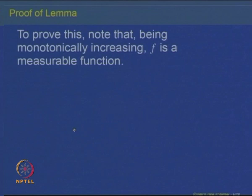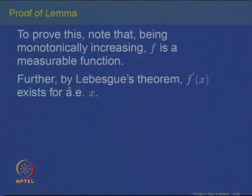To prove the lemma, we first note that being monotonically increasing, this function is measurable. Every monotonically increasing function is continuous almost everywhere — a theorem normally proved in basic real analysis courses. Alternatively, one can use the definition and look at the inverse image of an interval, which is also going to be an interval (or a union of two intervals at most) for a monotonically increasing function. So every monotonically increasing function is a measurable function.